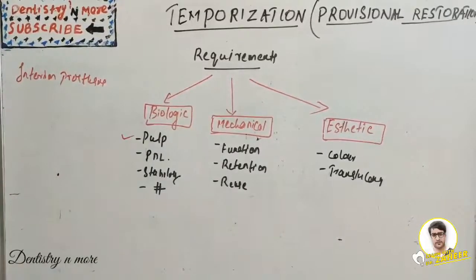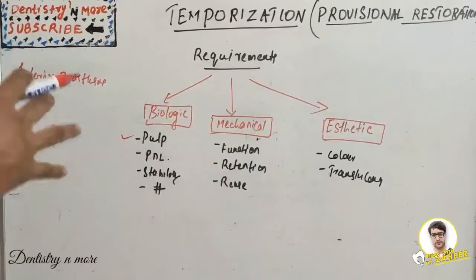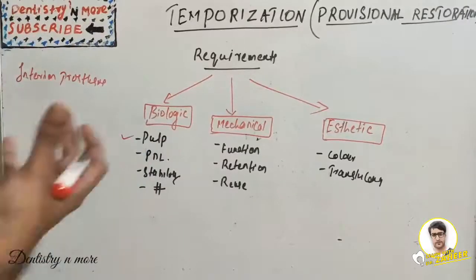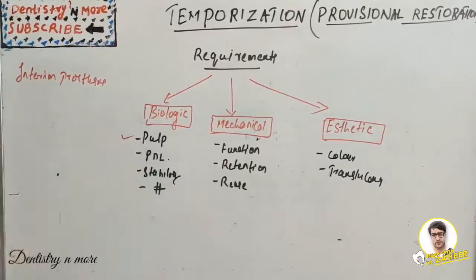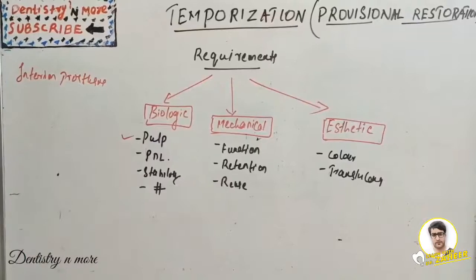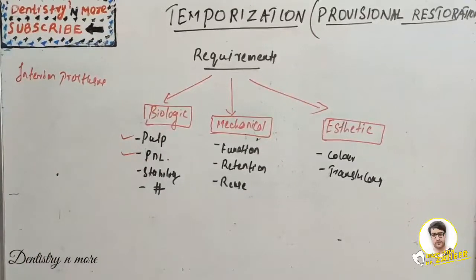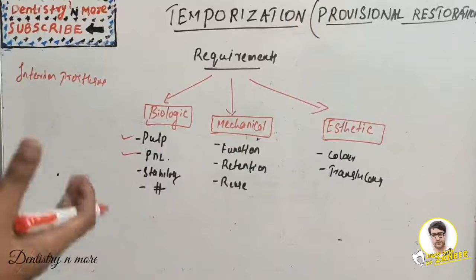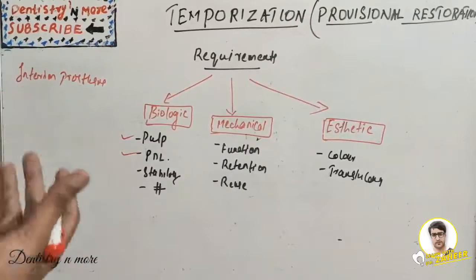Regarding pulp protection: during tooth preparation, dentinal tubules are exposed, so the provisional restoration should protect the prepared tooth from the oral environment. The tooth is reduced to an extent, increasing the chances of pulpal damage. To prevent further damage from exposure to the oral environment and reduce the risk of sensitivity and irritation to the pulp, the provisional restoration is essential. Regarding periodontal health, it should have good marginal fit, proper contour, and smooth surface to prevent plaque accumulation.